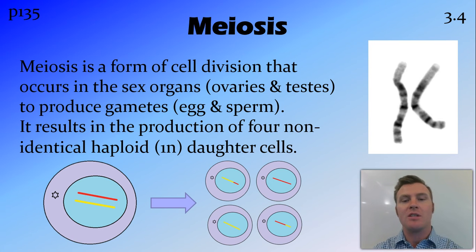Generally, meiosis results in the production of four non-identical haploid daughter cells. And haploid means that they have half the normal number of chromosomes. So in humans, the diploid number, 2n, that most cells have is 46 chromosomes found in 23 pairs. The haploid number that is found in the egg and sperm is 23 chromosomes, and there are no pairs there. So in humans' case, n would be 23.